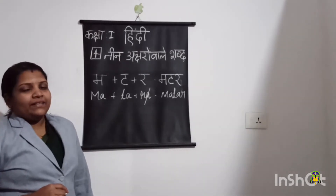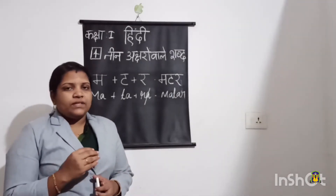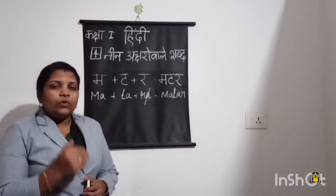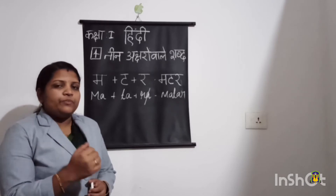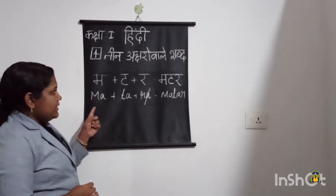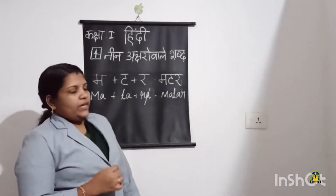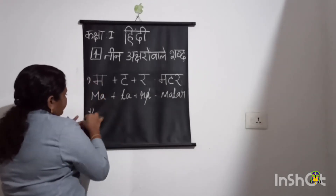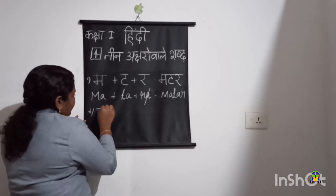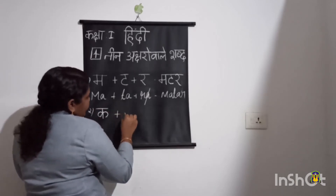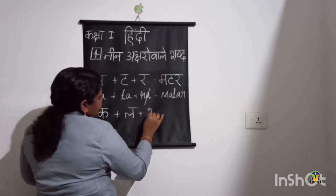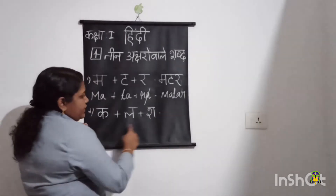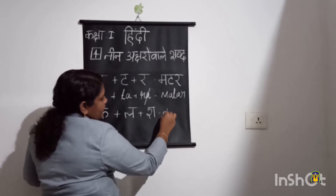Then, in your textbook there are four words already given with pictures. I will show you how to write and how to pronounce these four words. The first one is Matar. Next, I am going to write the second word. My first letter is Ka, then the second letter is La, and my third letter is Sa. Then I am going to join these letters.